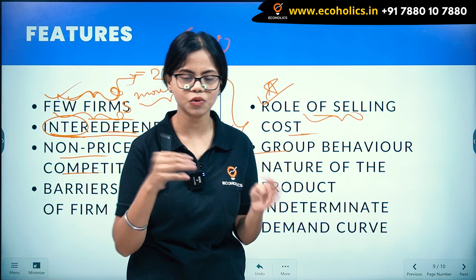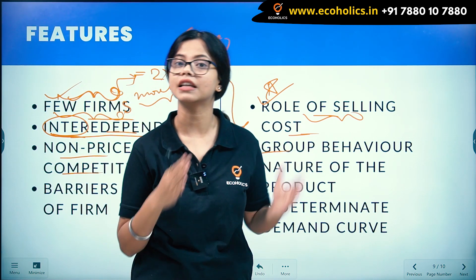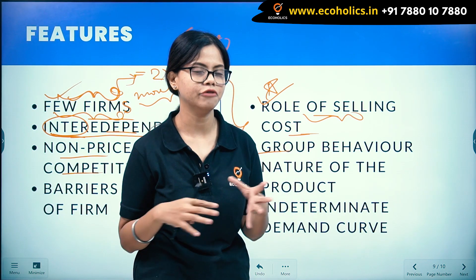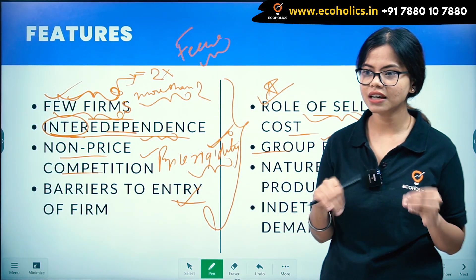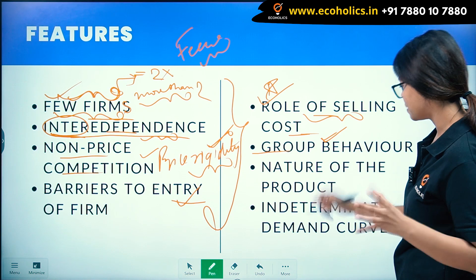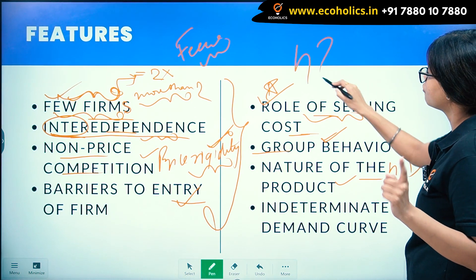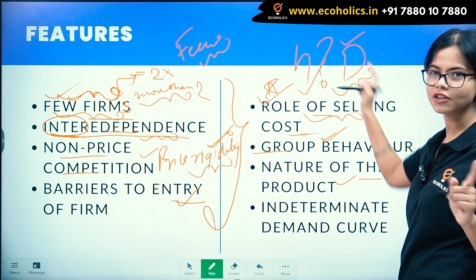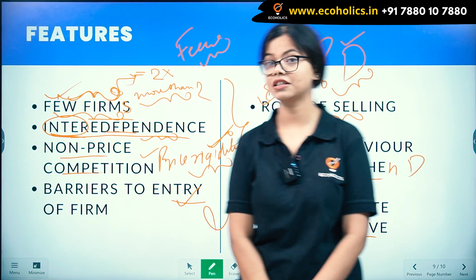Because there are few firms, price and output decisions of one firm influence the rest. Group behavior — they behave as if they are one single firm, deciding price and output together to maintain profit. Regarding the nature of the product: it can be homogeneous — which is pure oligopoly — or differentiated — which is imperfect oligopoly.